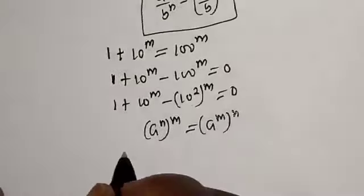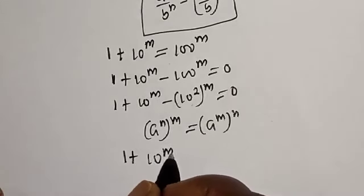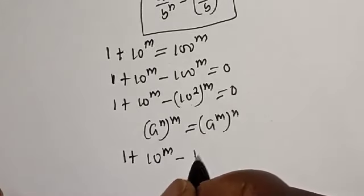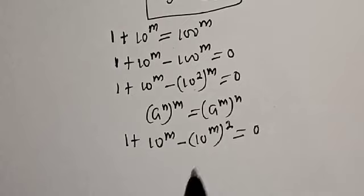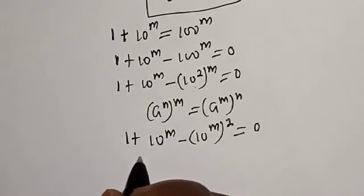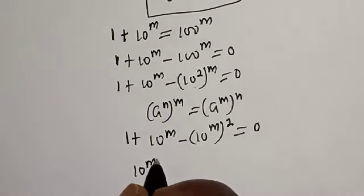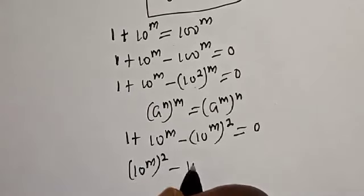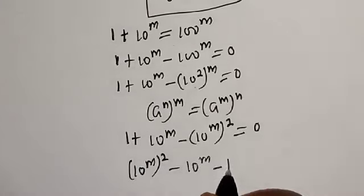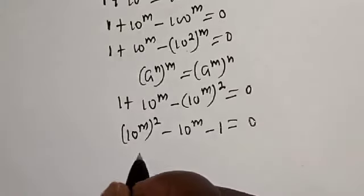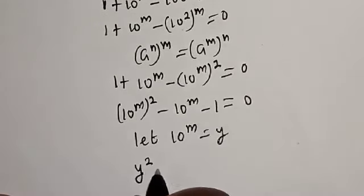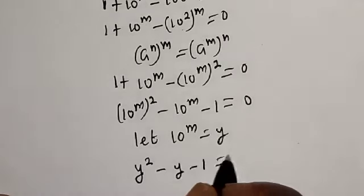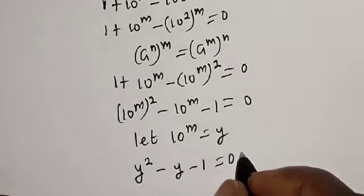So this becomes 1 plus 10^m minus (10^m)^2 is equal to zero. Let's rearrange: we have (10^m)^2 minus 10^m minus 1 is equal to zero. Now let 10^m equal y, so we have y^2 minus y minus 1 is equal to zero. This is a quadratic equation.